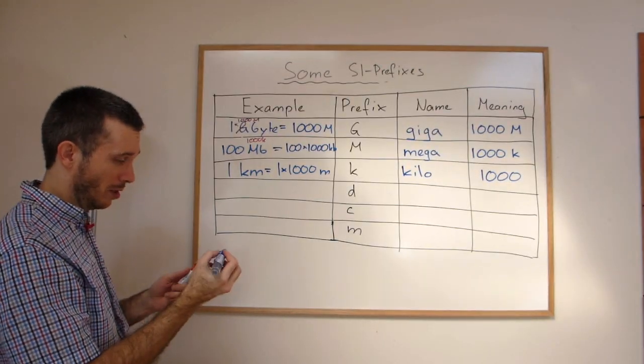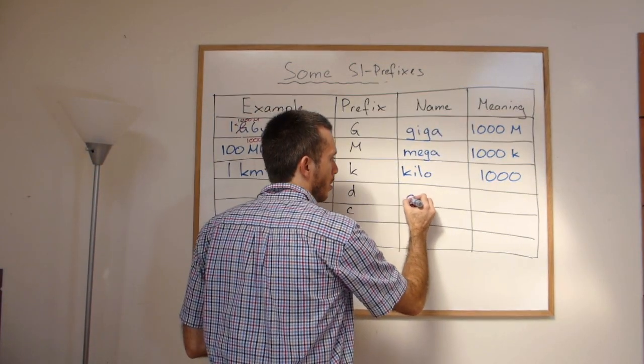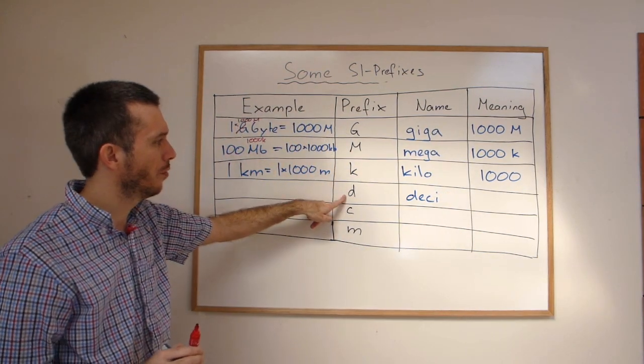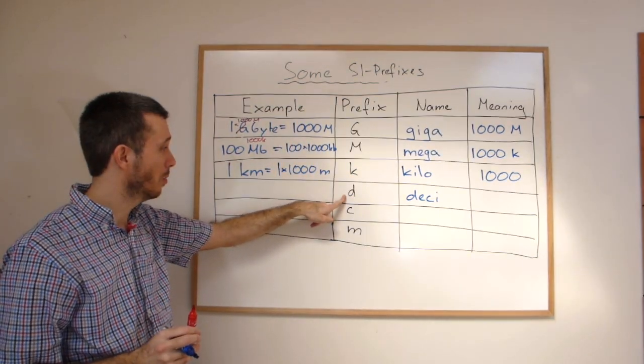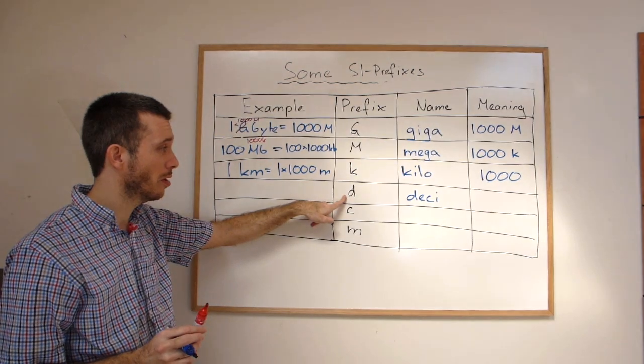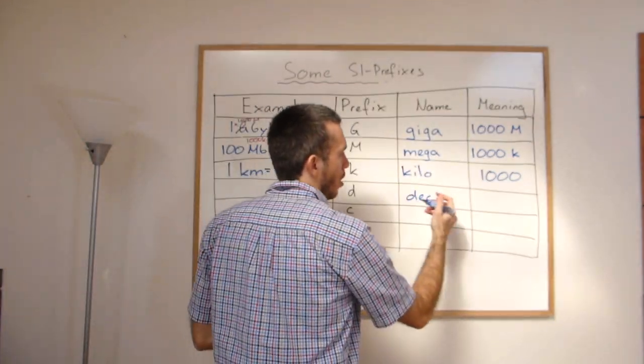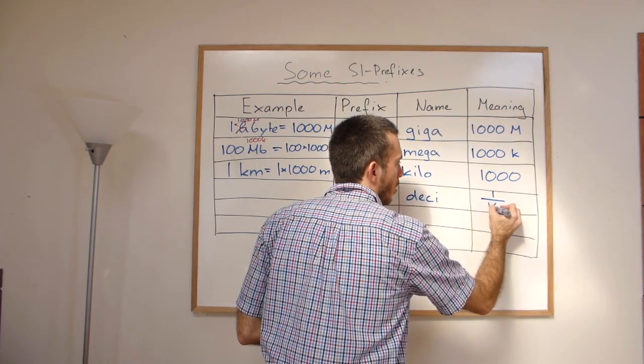Next one important one is the deci. Here it really helps if you know some French because what does the D stand for? It's like 10. So it's one over 10.